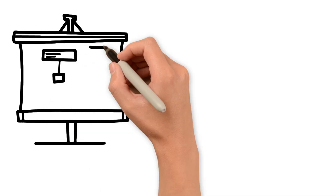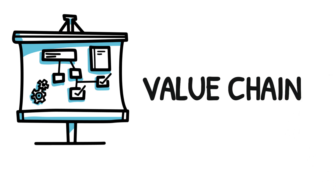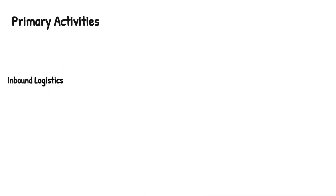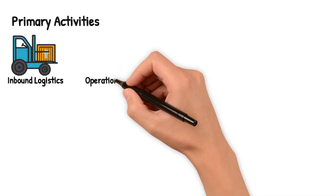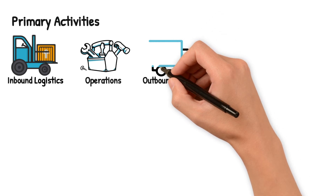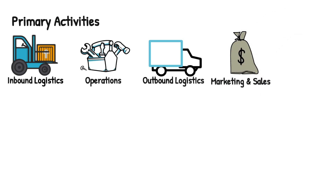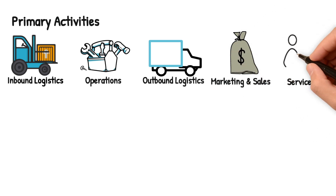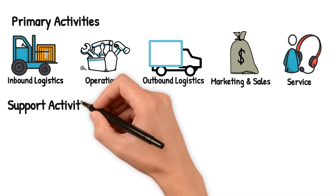In today's video we will learn about the value chain, a concept which is very important to know the chain of all business activities. The value chain contains certain set of activities. We call them primary activities. The primary activities include inbound logistics, operations, outbound logistics, marketing and sales, and at the very end, service. These are all connected in sequence.